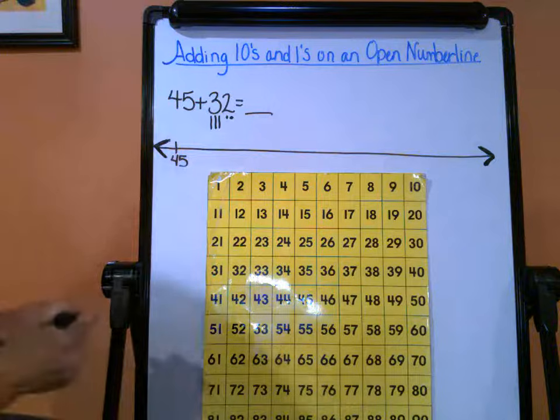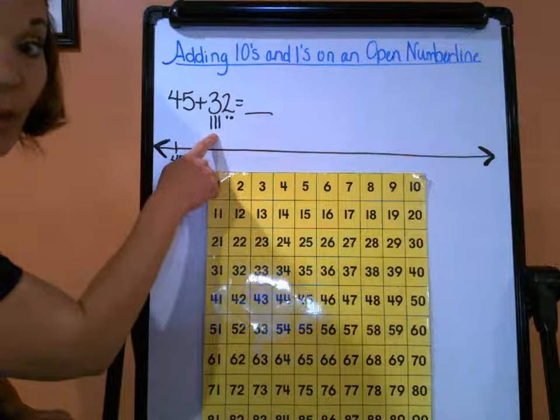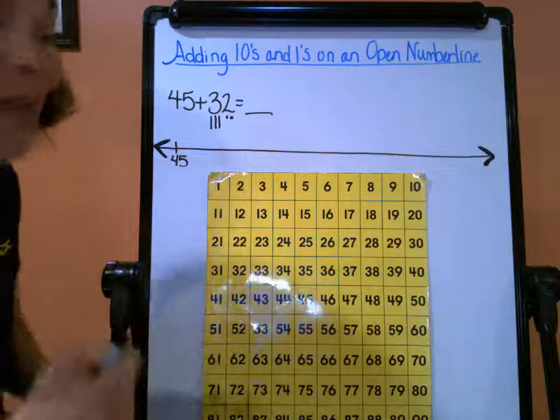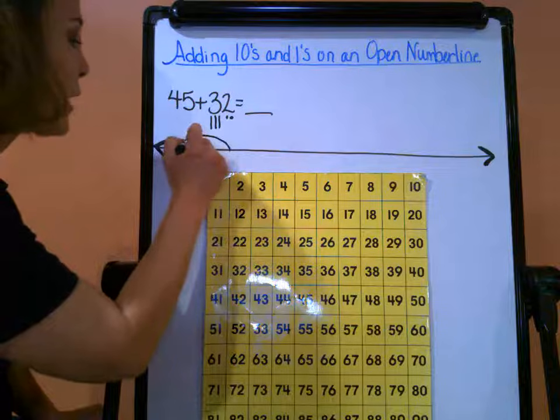As it's going to tell me how many big hops I need to make versus those little hops. So here I go, I'm at 45 and I want to start on my three tens. So remember, I'm going to take each ten individually. So 45, my first big hop is plus ten.